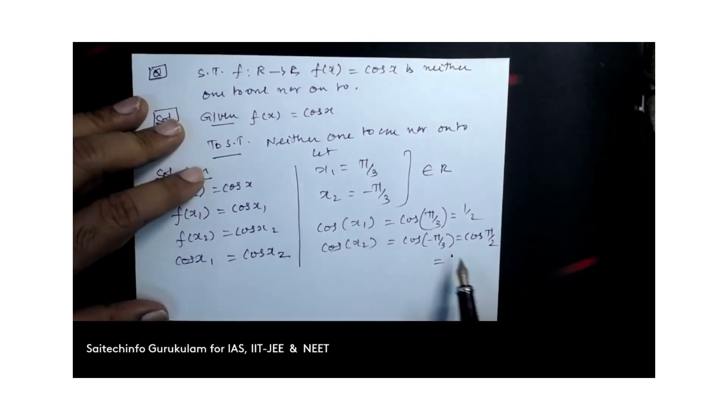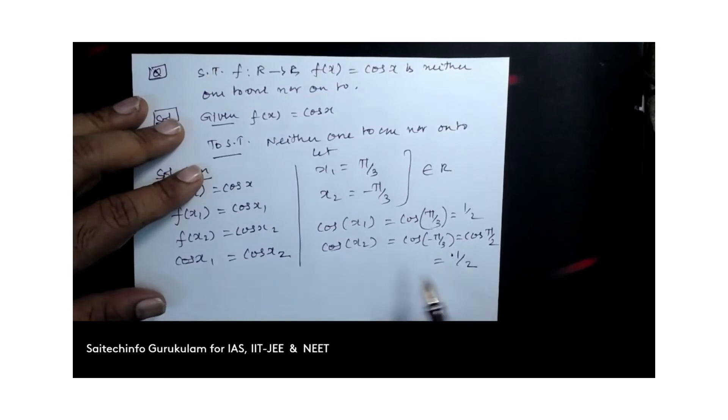You please correct that. I have put π by 2. Please correct this as π by 3.